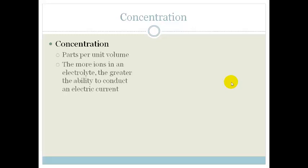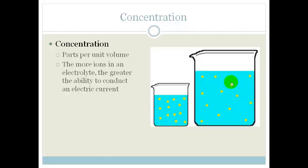Let's first look at concentration. Concentration is basically defined as the number of parts per unit volume. In other words, how many ions or atoms there are in a specific space. So, the more ions in the electrolyte, the greater the ability to conduct electric current.